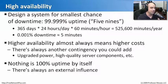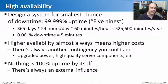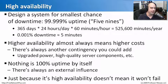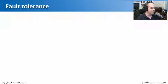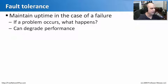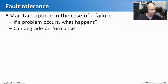High availability doesn't mean there is any fault tolerance. If your phone switch fails for five minutes, you don't have another switch to pick up the pace — when it's down, it's down. So there may be cases where we also want to add redundancy. A fault tolerant environment means that if we do have a failure, we continue to work and stay up and running.